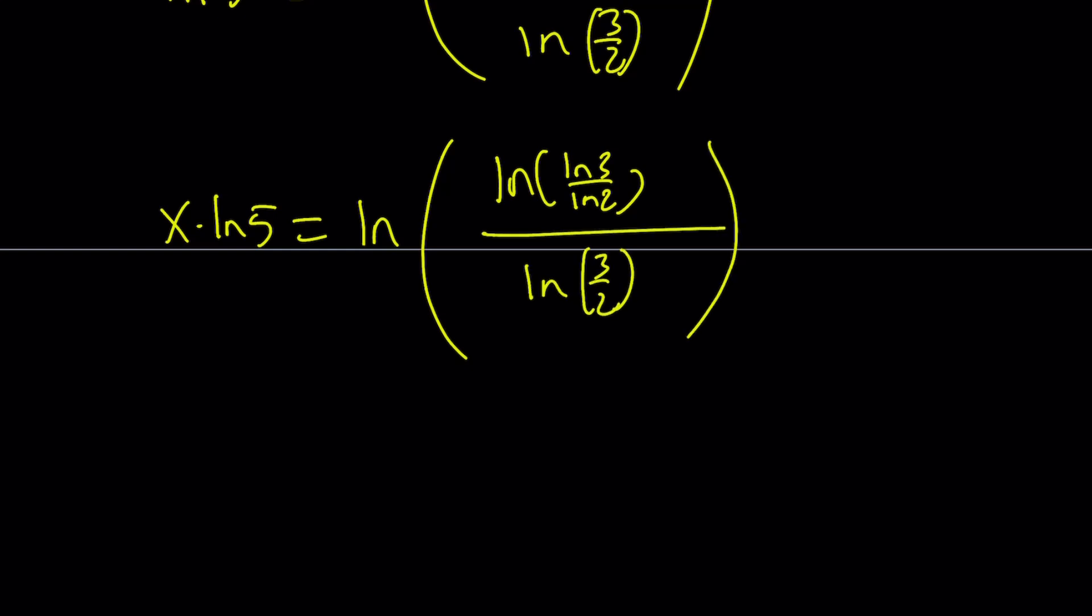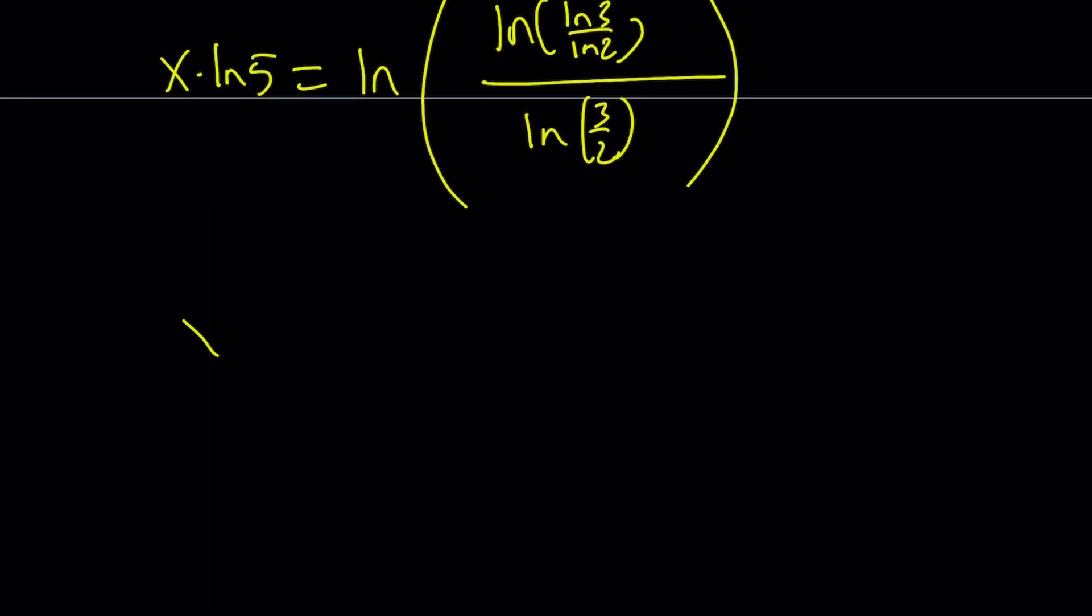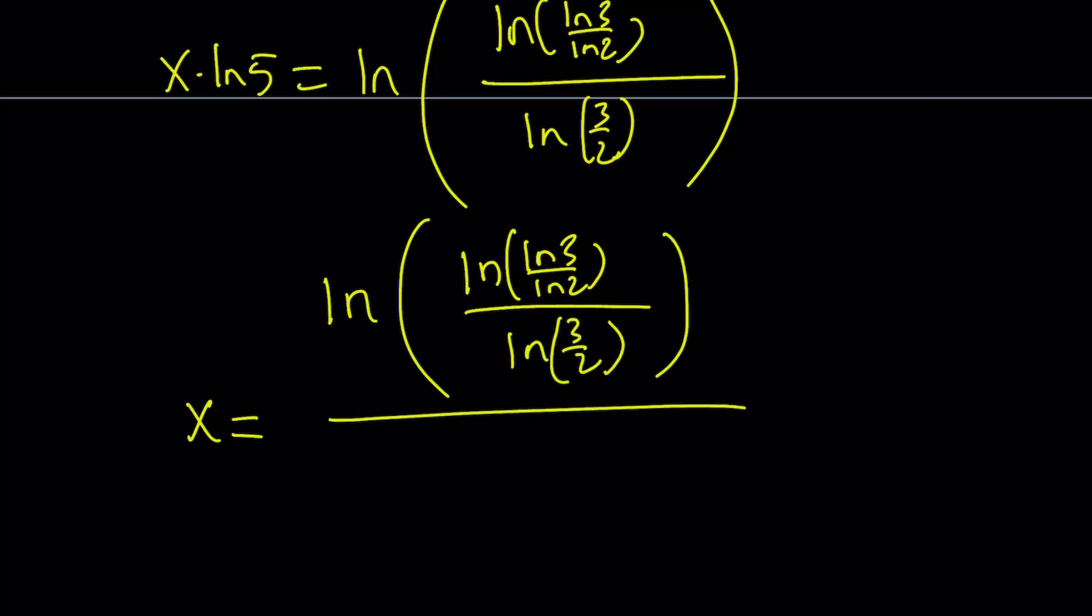And now, we're going to divide both sides by ln 5, and we're going to get x by itself. So x, if you divide both sides by ln 5, you're going to get the following: ln of ln ln 3 over ln 2 divided by ln 3 halves, and that is divided by ln 5. And that should be the answer.